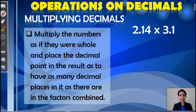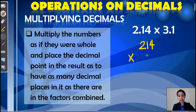Next, we have multiplying decimals. Multiply the numbers as if they were whole and place the decimal point in the result as to how many decimal places are in the factors combined. So in our example, we have 2 and 14 hundredths times 3 and 1 tenth. First, let us rewrite these decimals as if they were whole numbers. So 2.14 will become 214, and we have 31. Let's do multiplication now. 1 times 4 is 4. 1 times 1 is 1. 1 times 2 is 2.